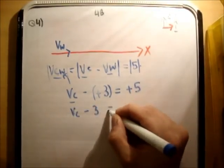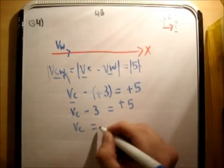Plus 3 is equal to plus 5, because I'm saying I'm moving with the current. Therefore, Vc minus 3 is equal to plus 5. Therefore, Vc is equal to 8.